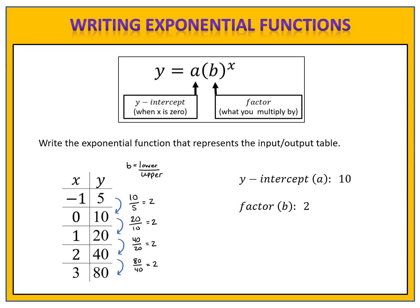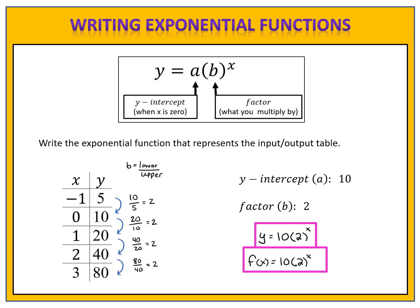Now that we know the a and b values, we can write the function. y equals a times b to the x becomes y equals 10 times 2 to the x power. That's the equation that generates this input and output table. You could also use function notation: f of x equals 10 times 2 to the x.